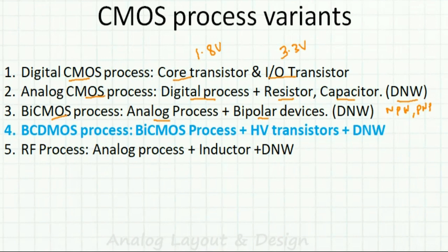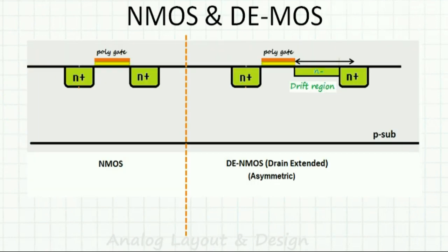We have one more process known as the BCDMOS process, which has the same BiCMOS — bipolar and CMOS — along with high voltage transistors known as LDMOS, and also deep N-well. Another process is the RF process, which includes the analog process plus inductor plus deep N-well.